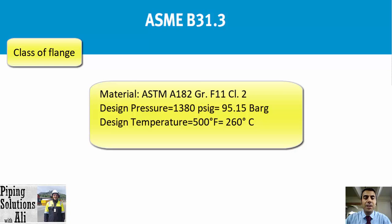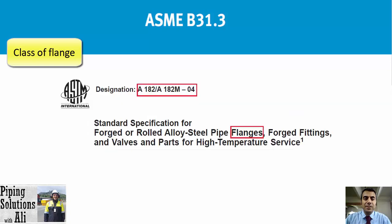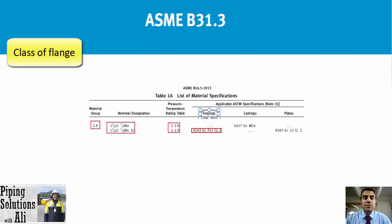Going back to determining the class of flange, the conditions are: material ASTM A182 Grade F11 Class 2, design pressure 1380 psi (or 95.15 bar gauge), and design temperature 500°F (or 260°C). As a first step we should specify the material group which covers ASTM A182 Grade F11 Class 2. This material belongs to material group 1.9, and we use Table 2-1.9 for pressure-temperature rating.